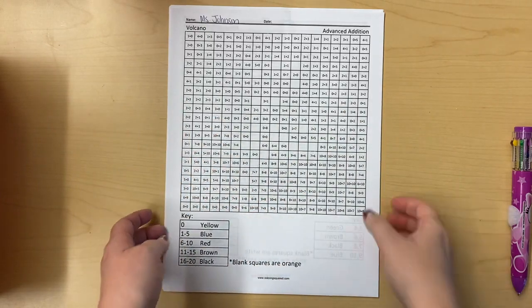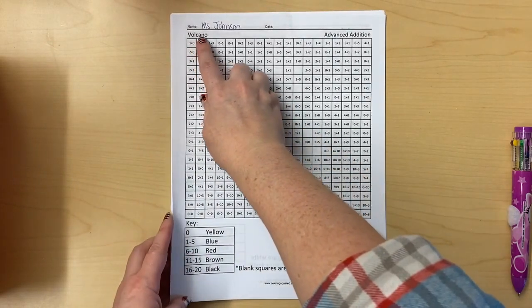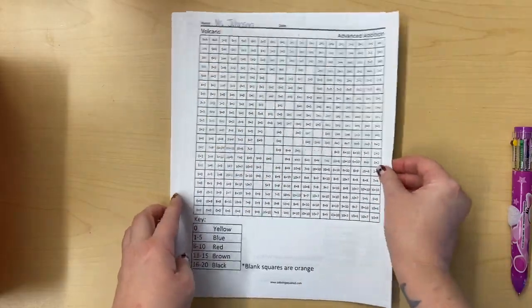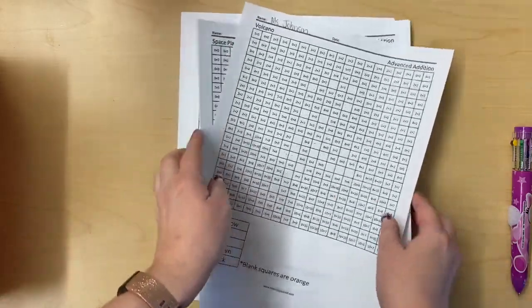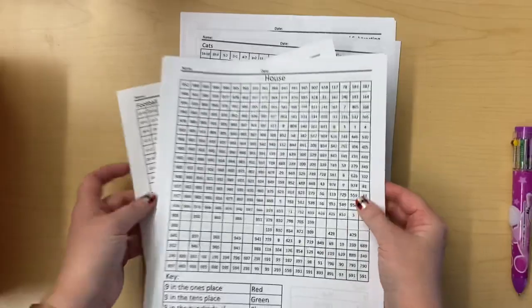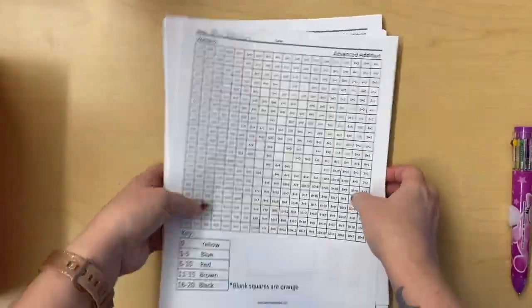There's a lot of different types of mystery pictures that you can get and they all say what picture it's gonna be at the top. So this is a volcano, there's a space planet, there's also mystery pictures on the back. So this one's a house, this one's a football. So you can look and see what kind of mystery picture you want.